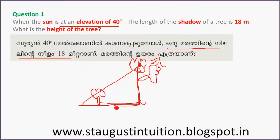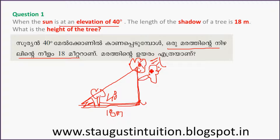The elevation angle is 40 degrees. The length of the shadow is 80 meters.